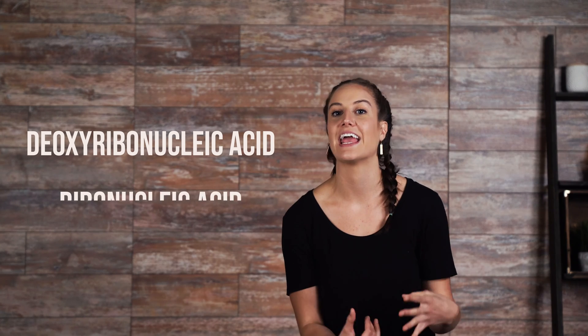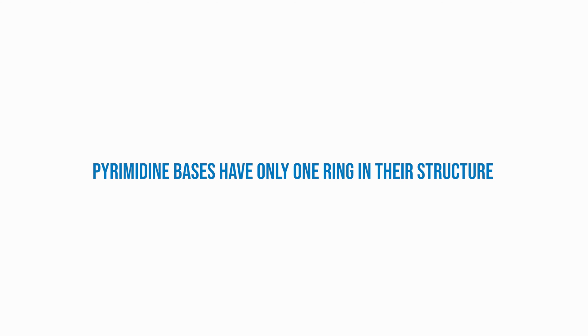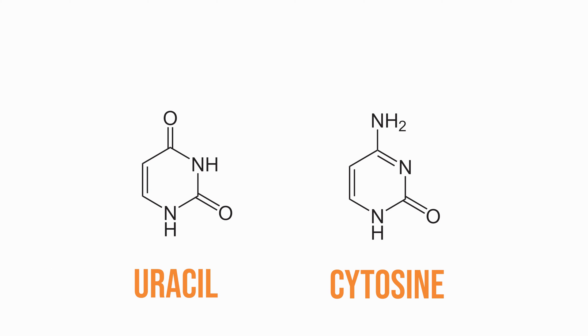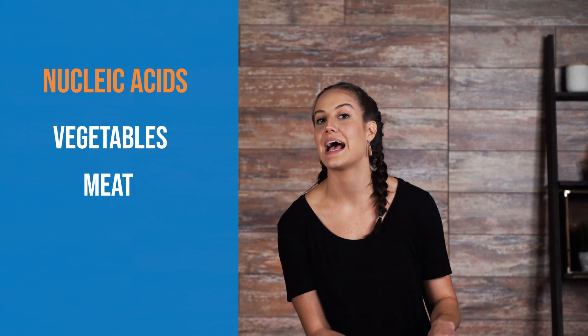Nucleic acids are composed of nucleotides. Nucleotides have three subunits: a nitrogenous base, a 5-carbon sugar, and a phosphate group. There are two types of nucleic acids: deoxyribonucleic acid, or DNA, and ribonucleic acid, or RNA. DNA and RNA get their names from the type of sugar they are composed of — DNA contains the sugar deoxyribose, and RNA contains the sugar ribose. There are two types of nitrogenous bases: purine bases and pyrimidine bases. Purine bases have two rings; adenine and guanine are found in both DNA and RNA. Pyrimidine bases have only one ring; thymine and cytosine are the pyrimidine bases in DNA, and uracil and cytosine are the pyrimidine bases in RNA. Nucleic acids make up a cell's genetic information — DNA works as an organism's instructions, and RNA works to make a cell's proteins. Nucleic acids can be found in vegetables, meat, and yeast.